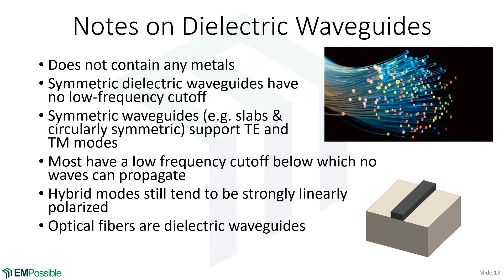Optical fibers are great examples of dielectric waveguides. There are many more kilometers of optical fibers installed in this world than any other type of waveguide. In a dielectric waveguide, in contrast to metal pipe waveguides, the field does extend a little bit outside the core — those are called the evanescent fields or evanescent tails. Roughly, it extends about a wavelength into the cladding region, which is the region outside the core.